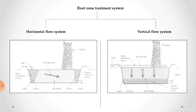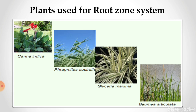There are two flow systems: horizontal flow and vertical flow, based on the direction in which the influent enters the system. If water enters horizontally, it is a horizontal flow system; if water is discharged from the top in a vertical downward direction, it is a vertical flow system. Plants that can be used for the root zone system include Canna indica, Phragmites australis, Glyceria maxima and Baumi articulata.